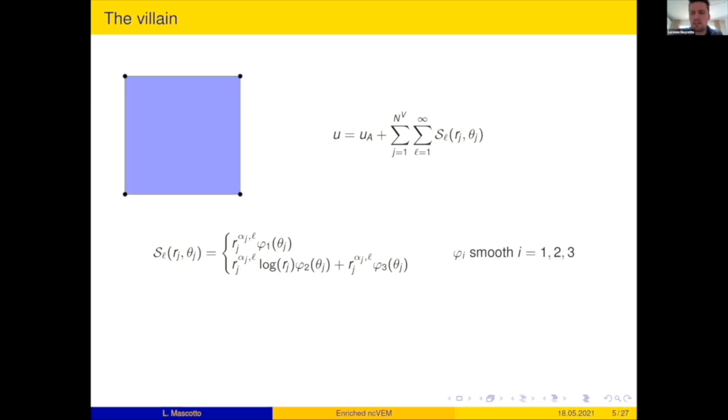You can just focus, for instance, on a square domain. Then I know from standard theory that the solution can be split into two contributions. One which is called U_A, which stands for you analytical is smooth, plus a sum over the vertices of a series of diabolical functions that they call singular. Written, for instance, in polar coordinates of the vertex j.